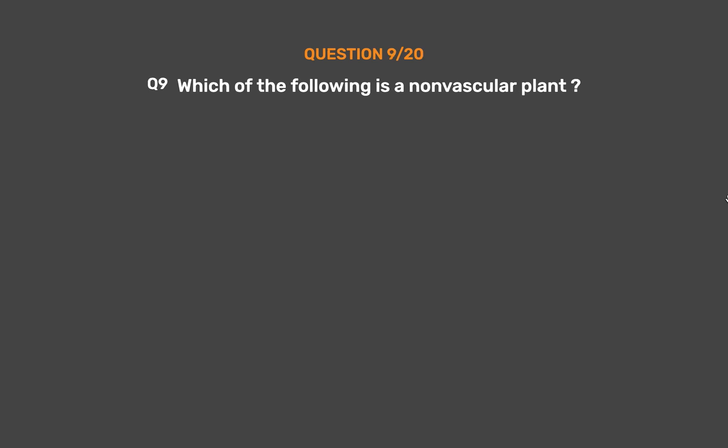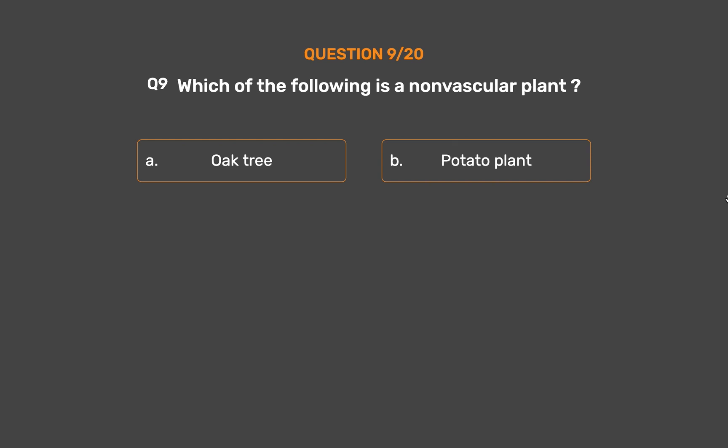Question number 9. Which of the following is a non-vascular plant? Option A: Oak tree. Option B: Potato plant. Option C: Grapevine. Option D: Moss.